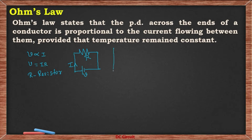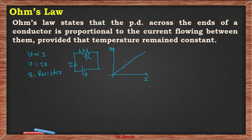Let us represent all these parameters in a graph. Along the y-axis is V and along the x-axis is I. Since V and I are directly proportional, we get a straight line at 45 degrees. The slope of this line is what we call resistance. Resistance is a property of the material.